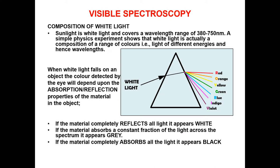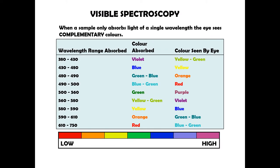If the material has the capability to completely reflect all light, it appears white. If it absorbs light with constant fractions, it appears gray. If the material completely absorbs all the light, it will appear black. These are basic physics concepts. When we come to visible spectroscopy, you should know about the spectrum of light — specifically that when a sample only absorbs light of a single wavelength, the eye sees the complementary color.